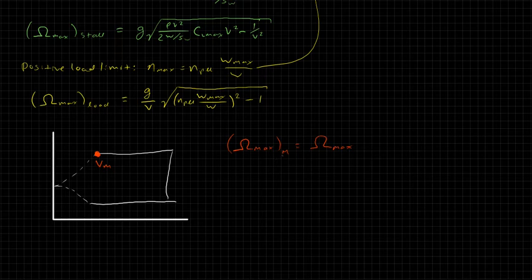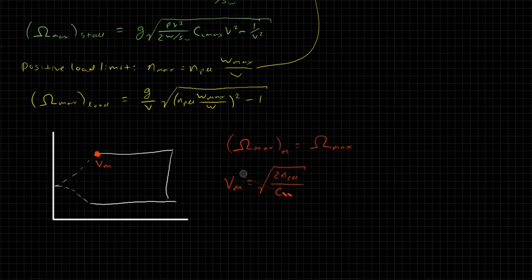And it turns out that this omega max at the maneuver point is the maximum turning rate that we can get overall. We can't go any higher than that. And the way that we find it is by plugging in our maneuver velocity into either equation, either the turning rate stall limited or the maximum load limited turning rate.